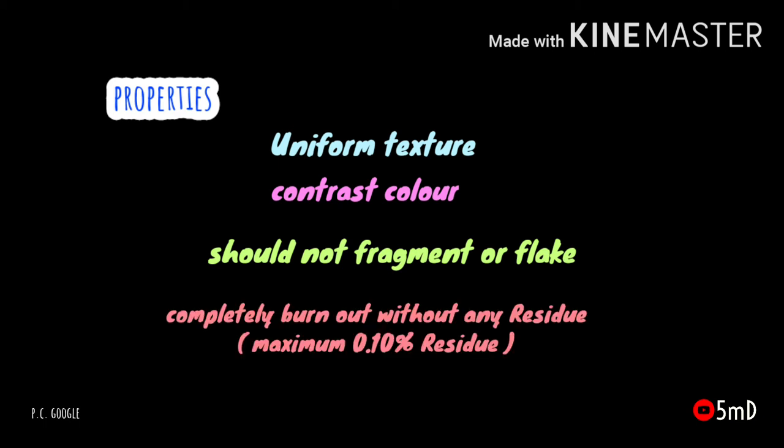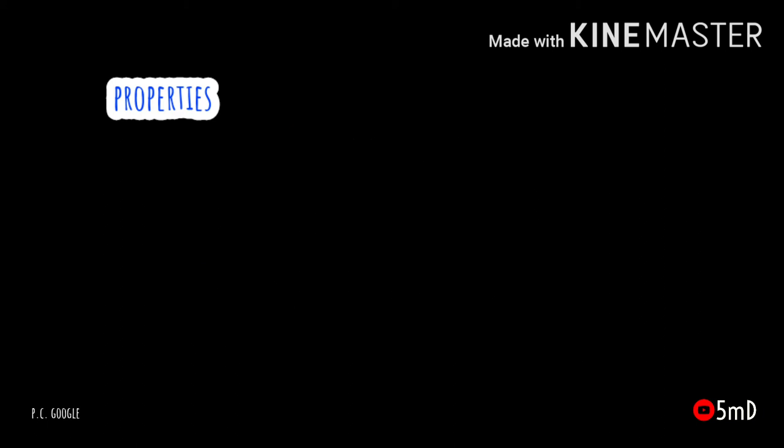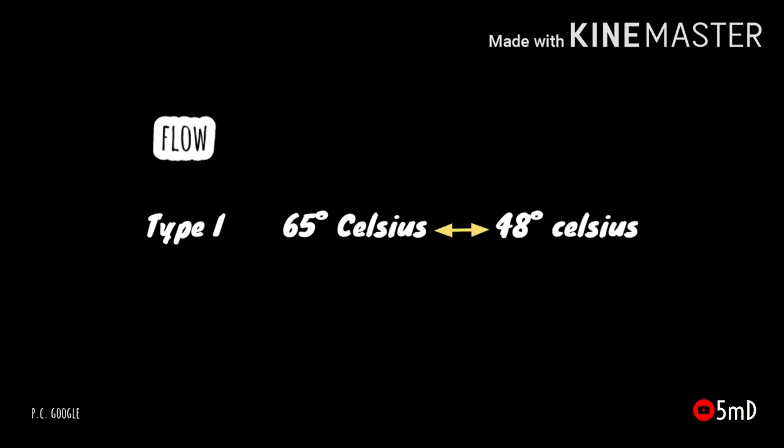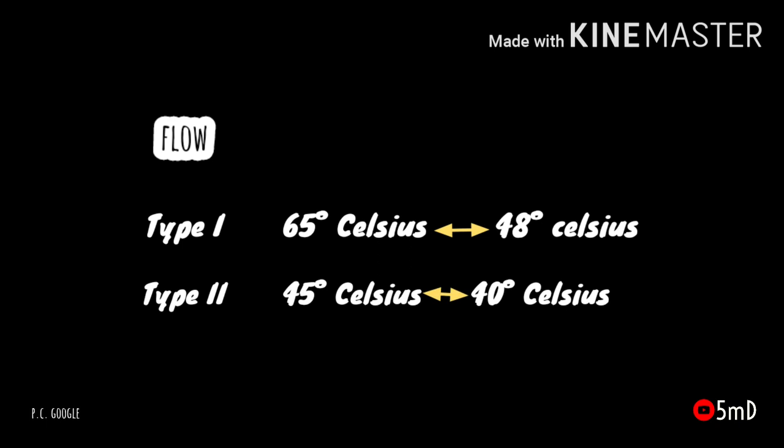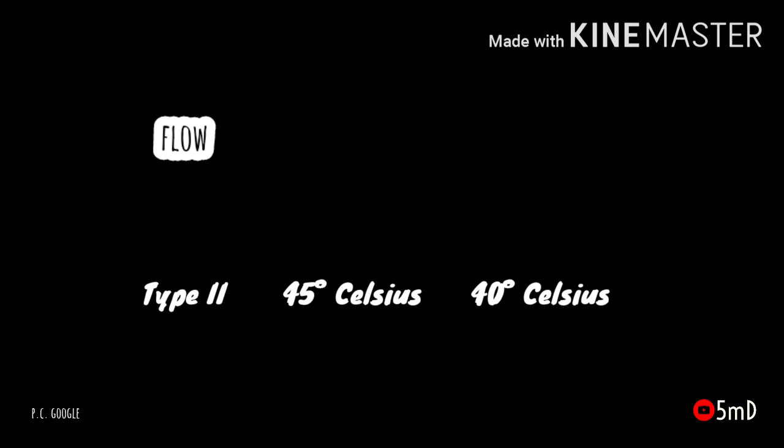The wax should completely burn out by converting residual carbon to volatile gases. Ideally, when the wax melts and vaporizes at 500 degrees Celsius, the residual leftover should be less than 0.1 percent of the dental wax by weight. Type 1 dental wax flows above 65 degrees Celsius and begins to harden slowly below 65 degrees Celsius, becoming almost solid below 48 degrees Celsius. For Type 2 dental wax, this range occurs between 40 to 45 degrees Celsius.